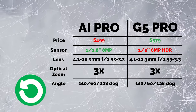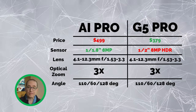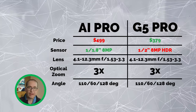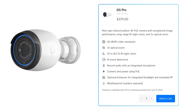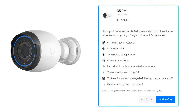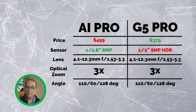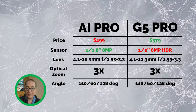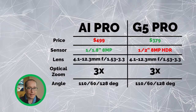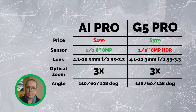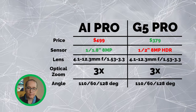Looking at the specs, as I mentioned before, there are more similarities between these two cameras than there are differences. Let's start with just the basics. The AI Pro is $499 and the G5 Pro is $379 for the base unit. The image sensor on the AI Pro is a little bit bigger — one over one-eighth of an inch versus a half inch for the G5 Pro. The G5 Pro sensor says it has HDR, but I would contend that the AI Pro has HDR as well — you can see that processing when we jump into the images.